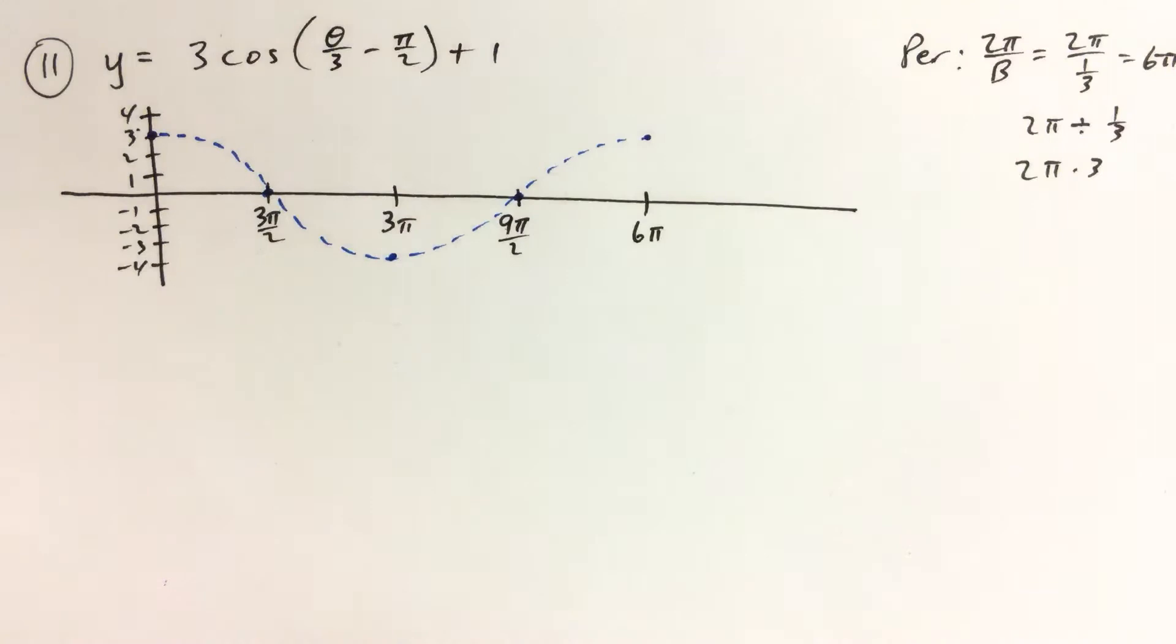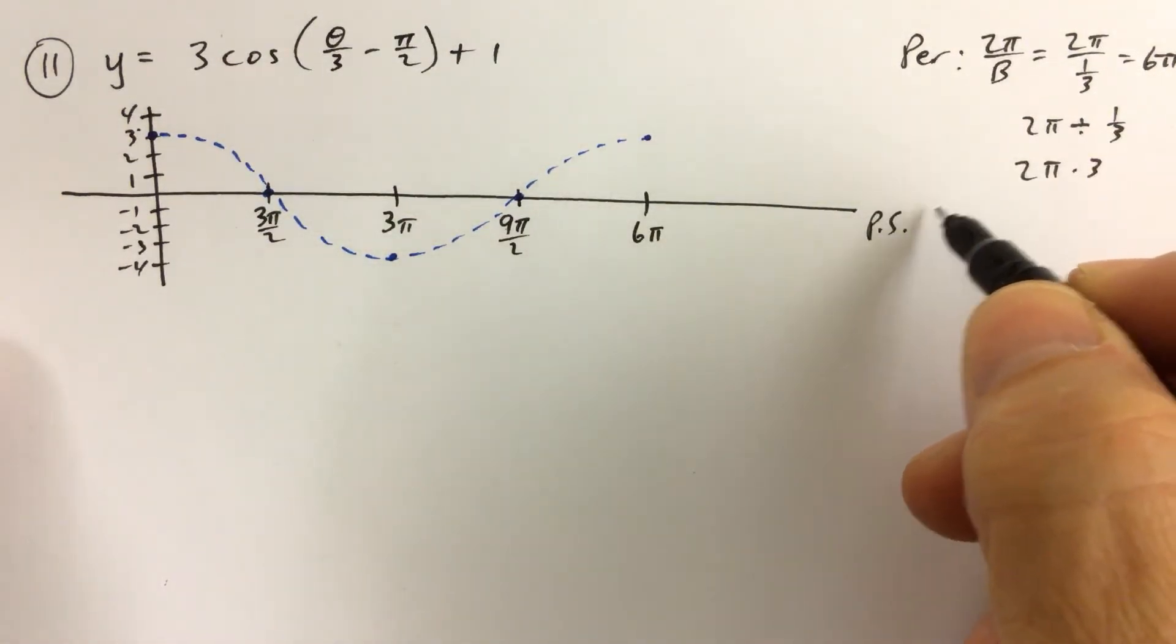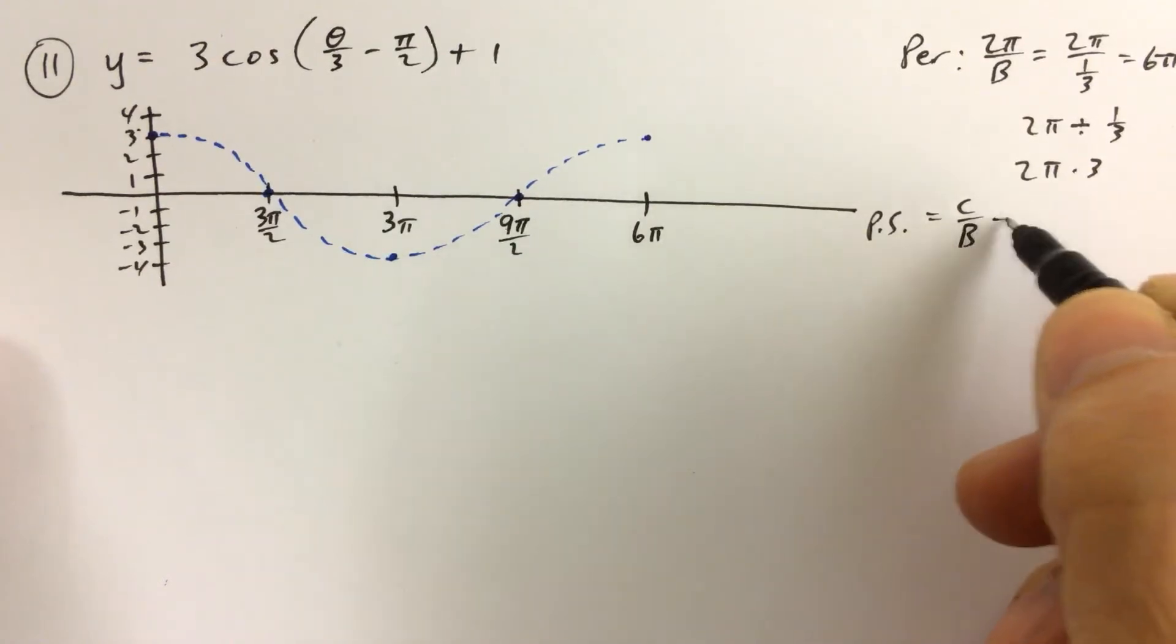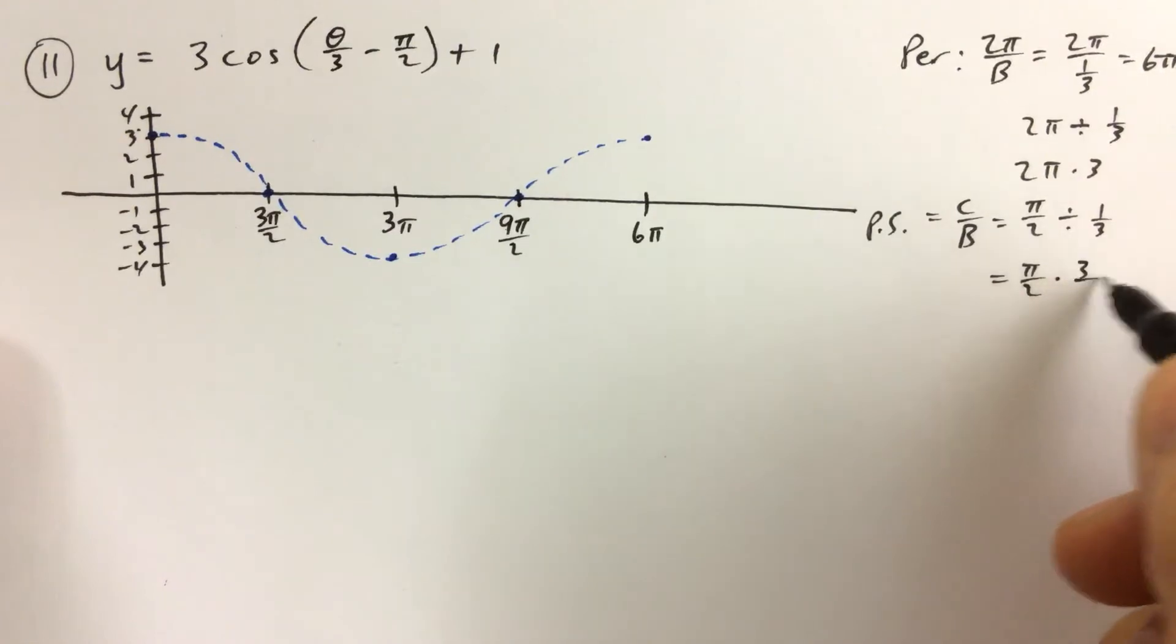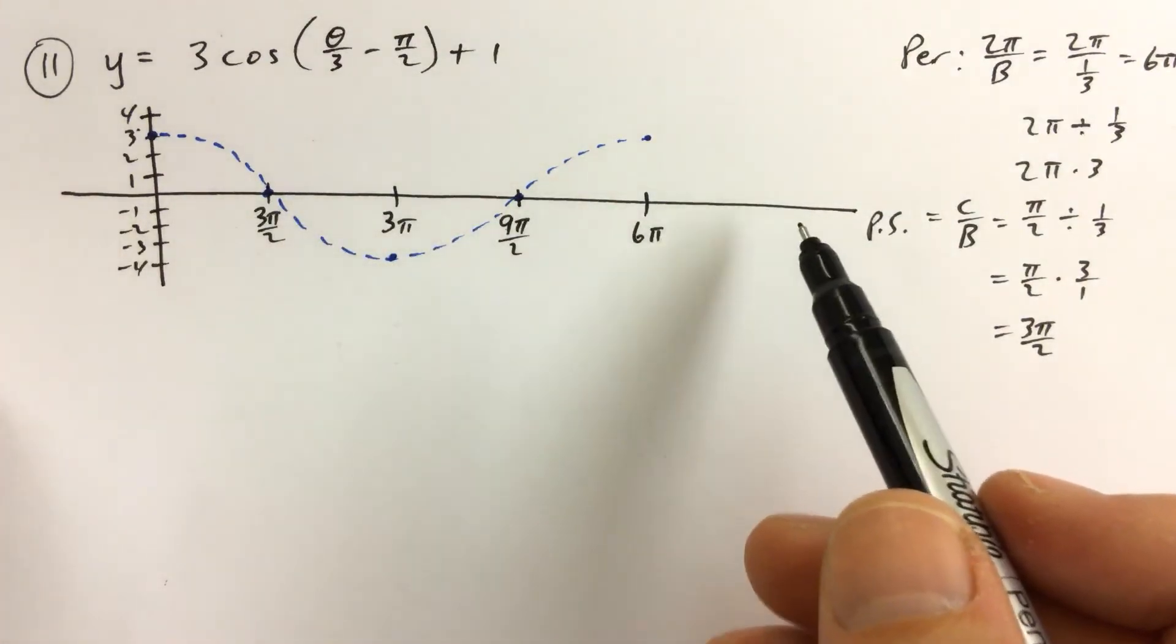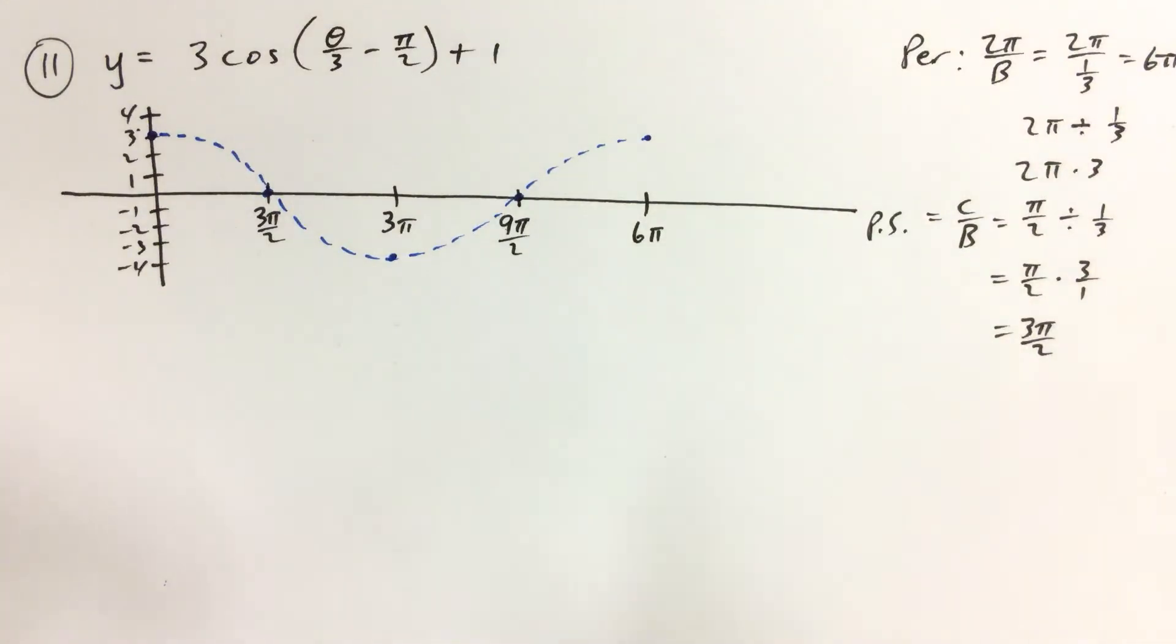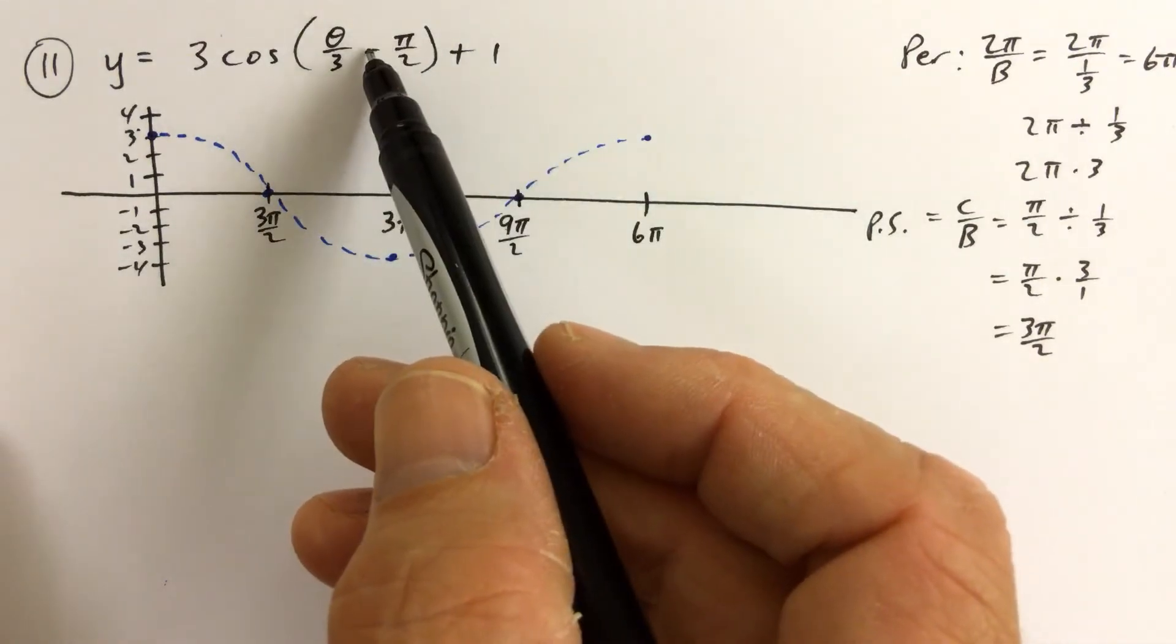And then we know we have to do the phase shift. The phase shift is C over B. Now C in this case is π over 2 divided by the B which is 1/3. So the phase shift is π over 2 times 3 over 1, which is 3π over 2. So we just have to put one more 3π over 2 because we're going to move it to the right because of the minus sign.